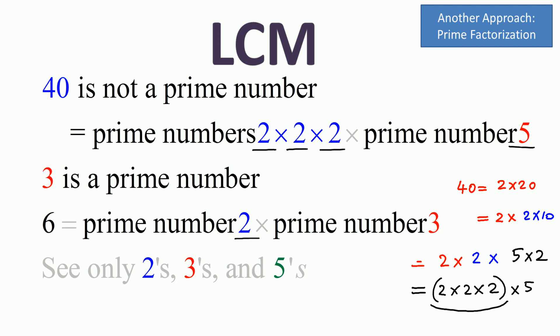We see 2's, 3's, and 5's. The maximum number of 2's is three 2's, that means 2 times 2 times 2, which is 8. The maximum number of 3's that appears is just 1.